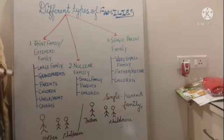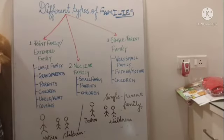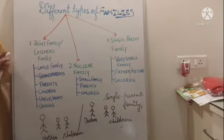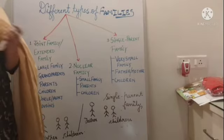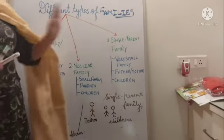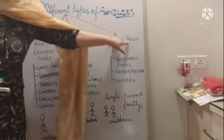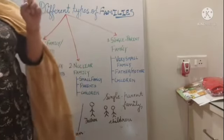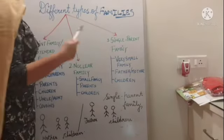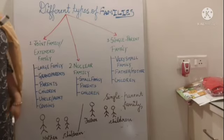So children, last but not the least, let's discuss about our third type of family, which is known as the single parent family — S-I-N-G-L-E — single parent family. This is a very small family. Why is it a very small family? Because in such type of families, single means one — one parent. Either the children live with their mother or the children live with their father. They don't live with both.